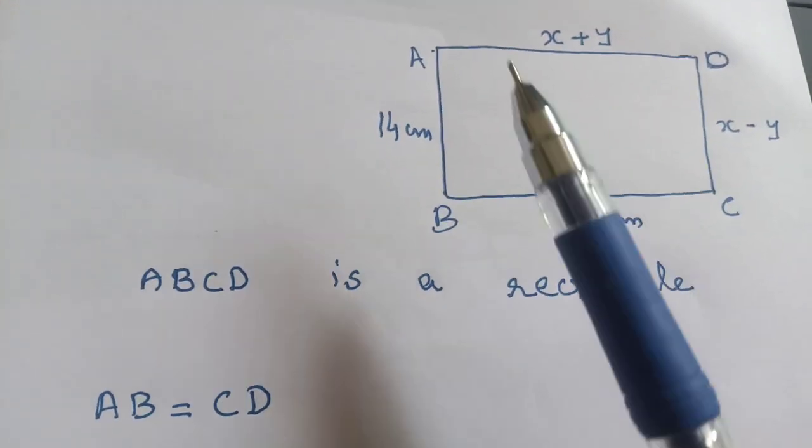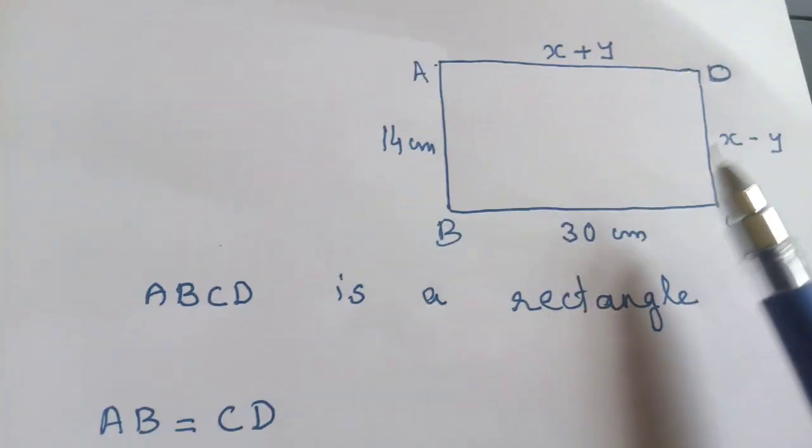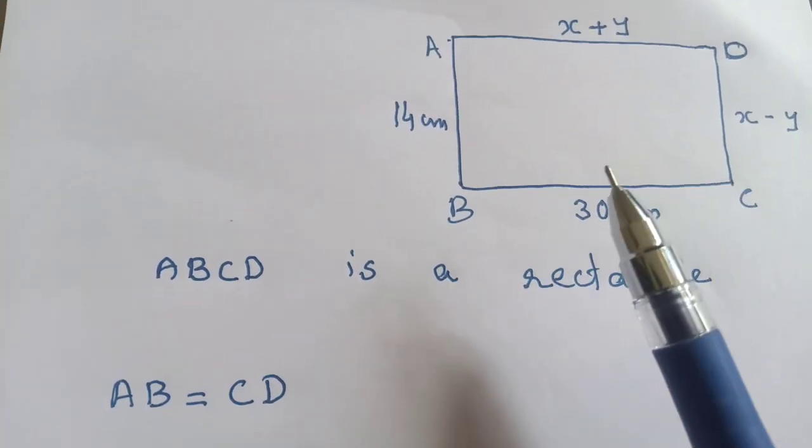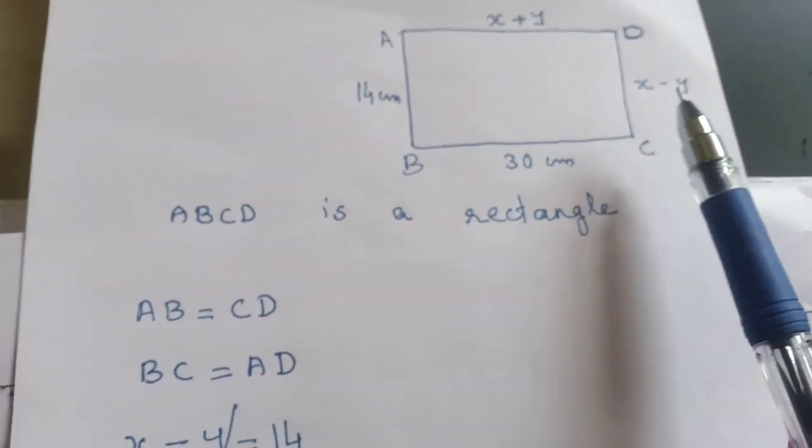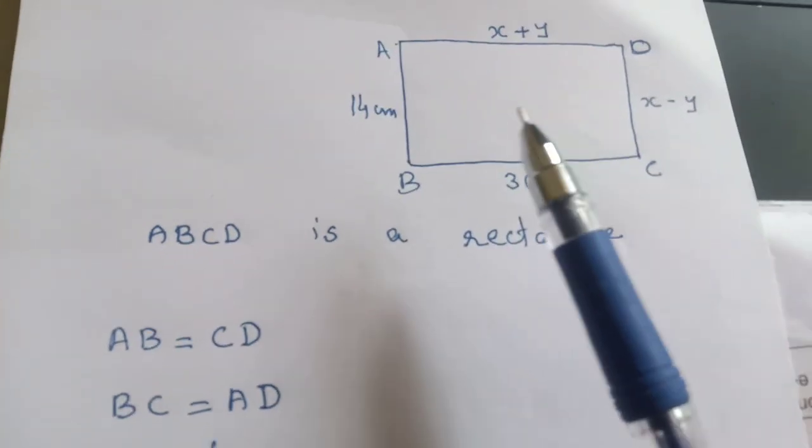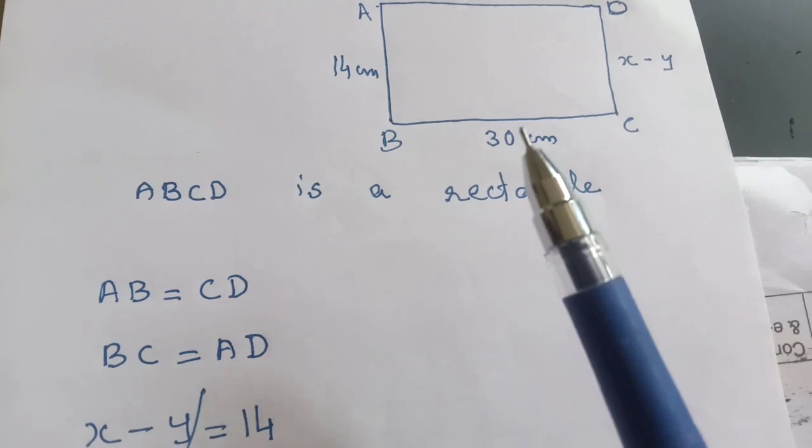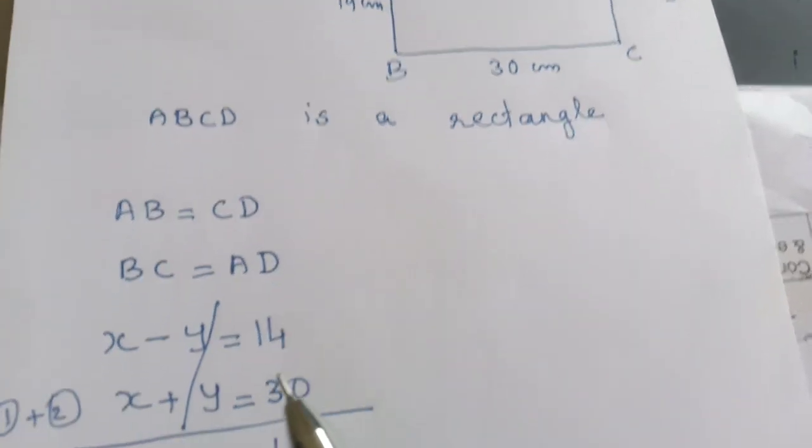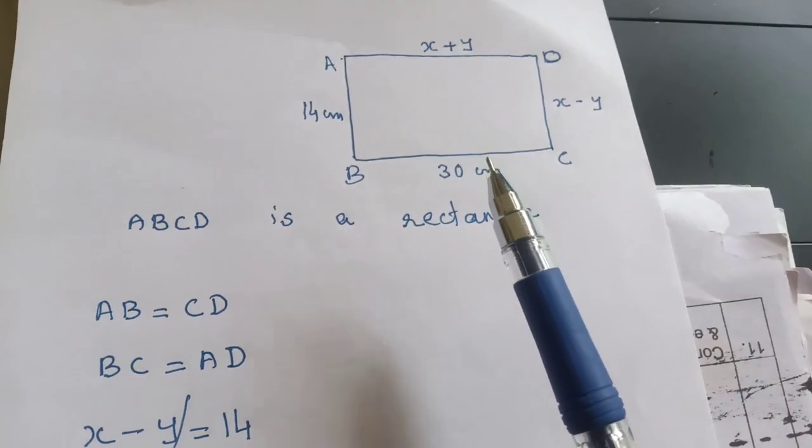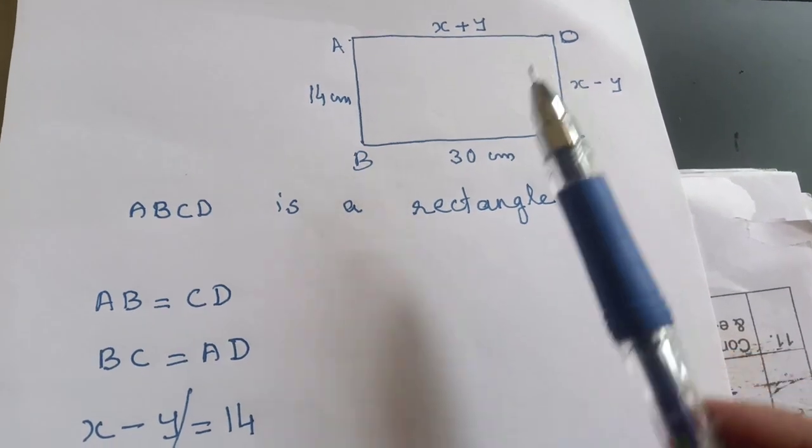AB equals CD, so x minus y equals 14. BC equals AD, so x plus y equals 30. These are our two equations.